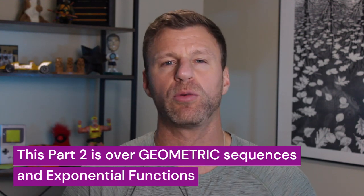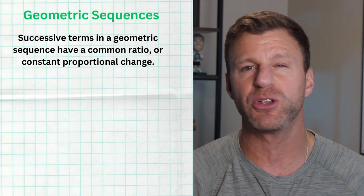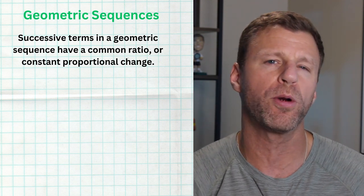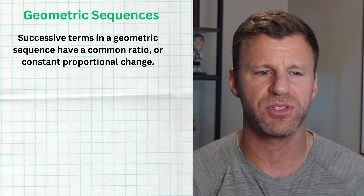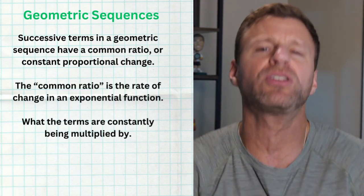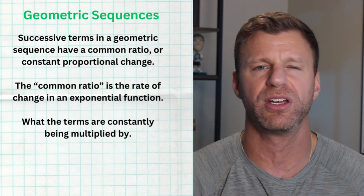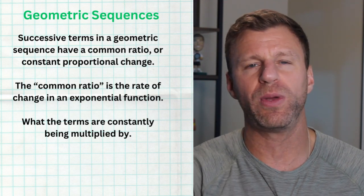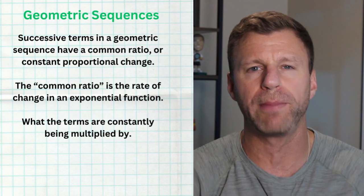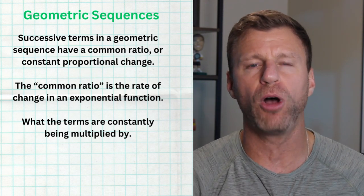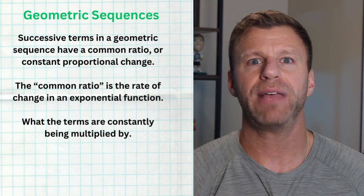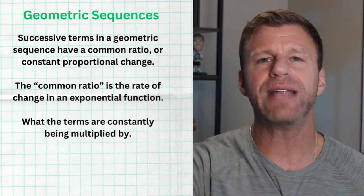A sequence is literally just a list of numbers that have some type of pattern. A geometric sequence is a specific type where we see a common ratio — a proportional change — between consecutive terms. This common ratio is basically the rate of change we'd see in an exponential function. We're multiplying by the same value between every single term, and when you do that, you grow or decrease exponentially — proportionally.